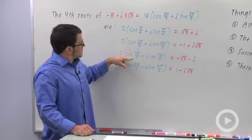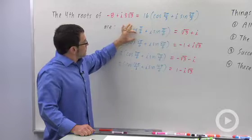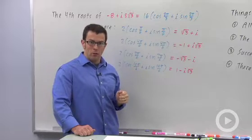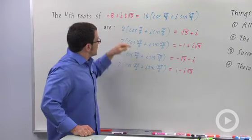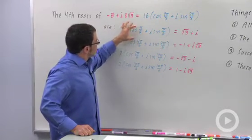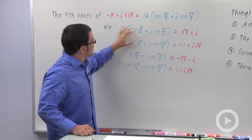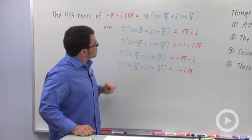And each of these successive roots is going to be how far apart? Well, 2 pi, one revolution, divided by 4, so pi over 2. In each case, I'm adding pi over 2. Now, it looks like I'm adding something else, but it's actually 3 pi over 6 that I'm adding, which is the same as pi over 2. So each of these is pi over 2 apart.